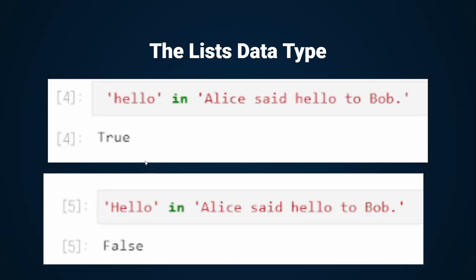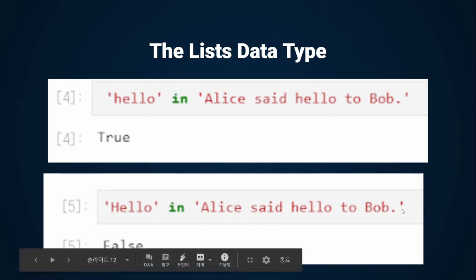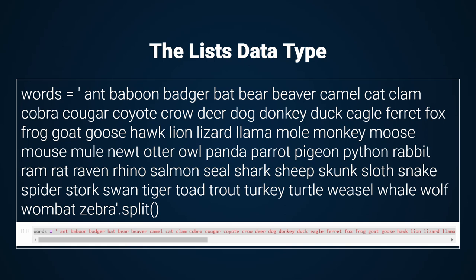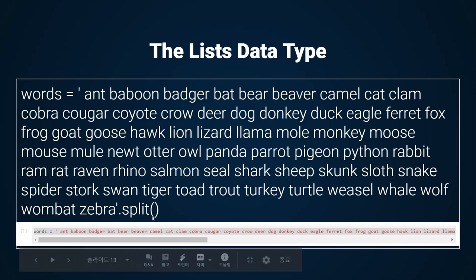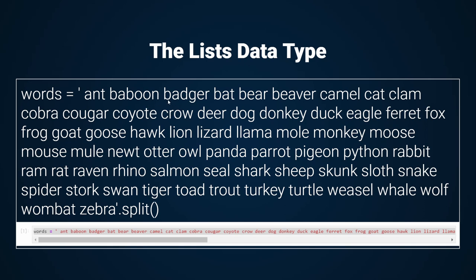The list data type can be used this way. 'hello' in 'Ellie said hello to bob' is True because hello is right there. However, 'Hello' in 'Ellie said hello to bob' is False — do you know why? Because 'Hello' starts with a capital letter. I use the split method here. The string data type has a split method which returns a list of strings made from a string that has been split. By adding .split() at the end, Python will automatically separate every word by spaces.